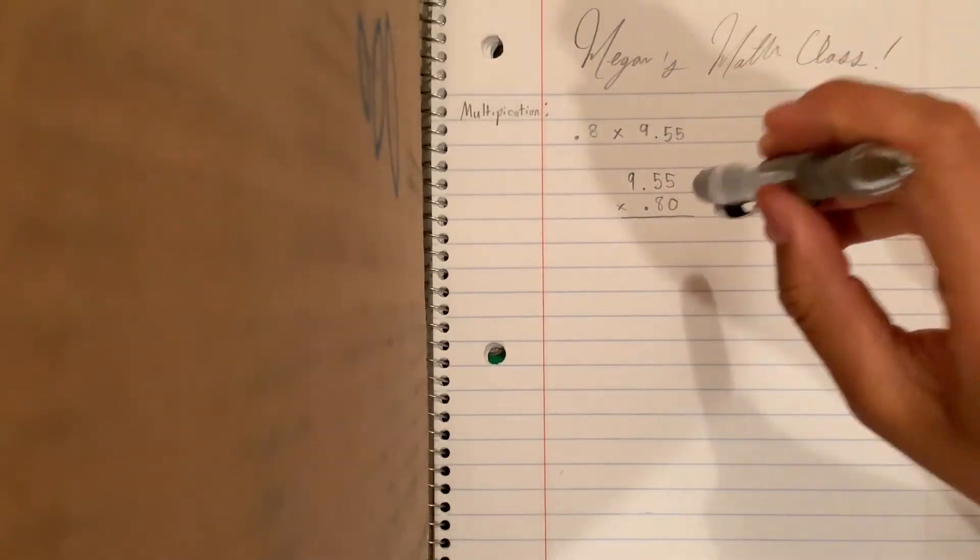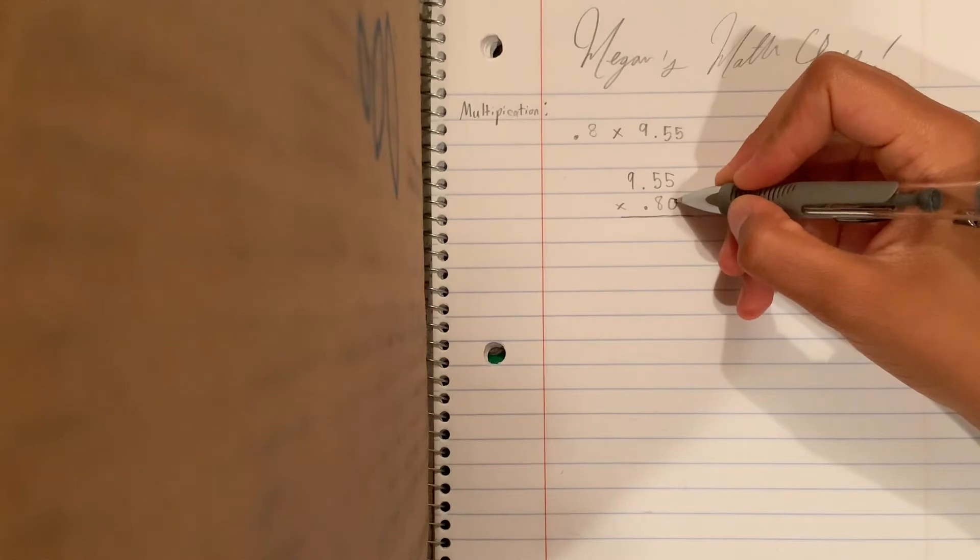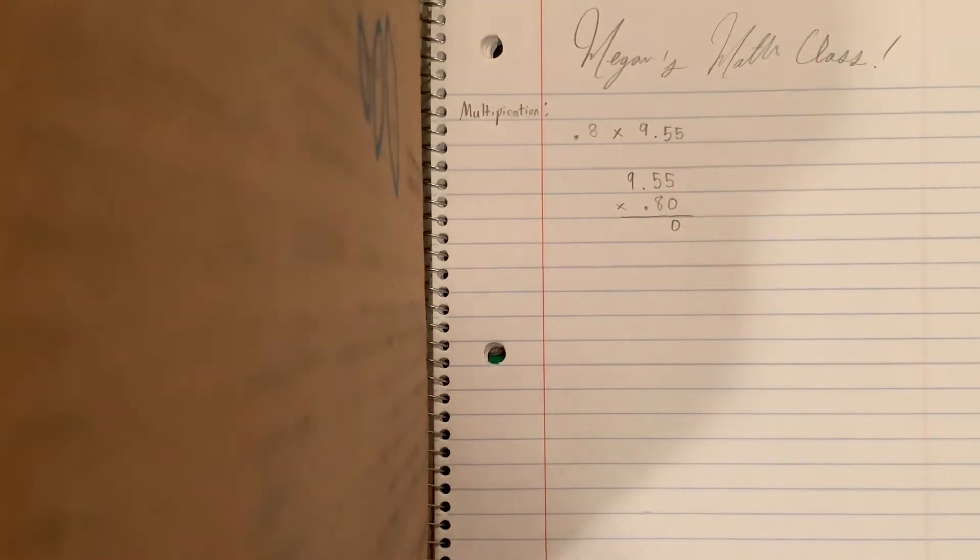So first things first, whenever you're doing multiplication, you want to start with the bottom right side and you're gonna go up and look at this one and you're gonna say, hmm, what's 0 times 5? Well, that's 0. And fun thing about 0 is that anything multiplied by it is 0. So we're just gonna do that.